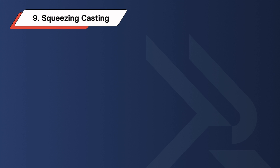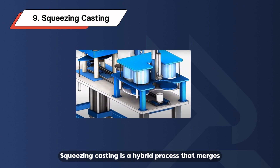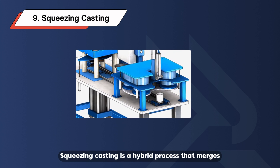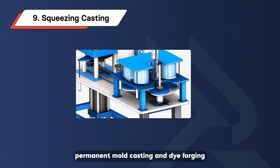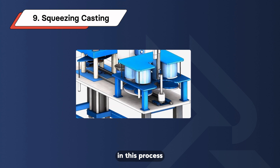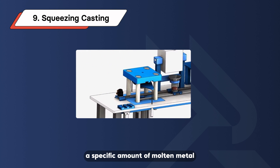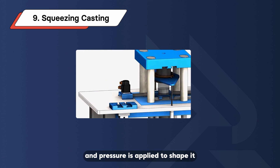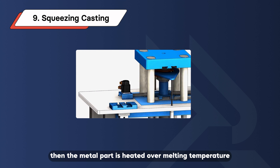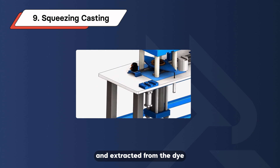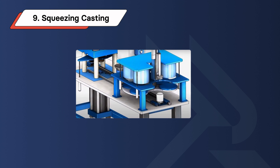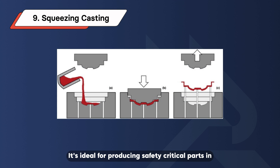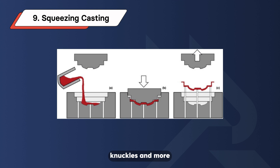Squeezing Casting. Squeezing casting is a hybrid process that merges permanent mold casting and die forging. In this process, a specific amount of molten metal alloy is injected into a die and pressure is applied to shape it. Then, the metal part is heated over melting temperature and extracted from the die. It's ideal for producing safety-critical parts in automotive systems like space frame joints, aluminum front steering knuckles, and more.